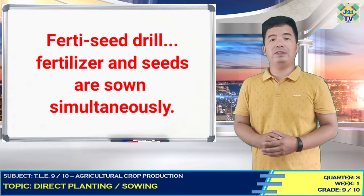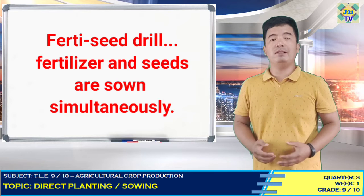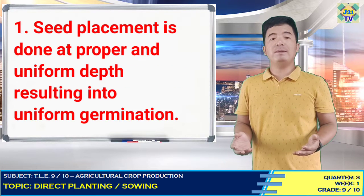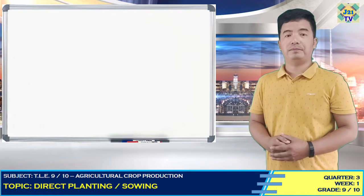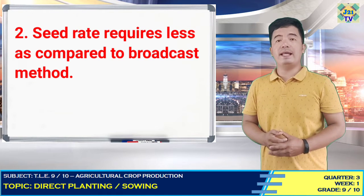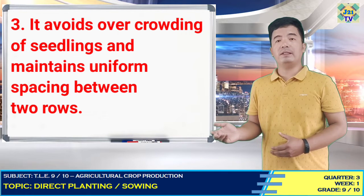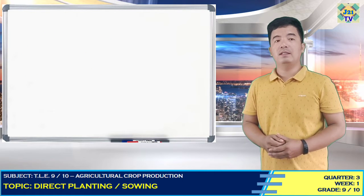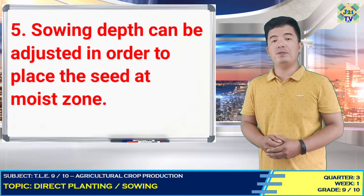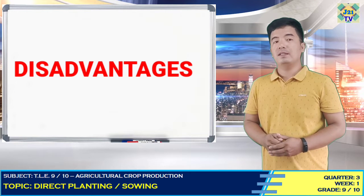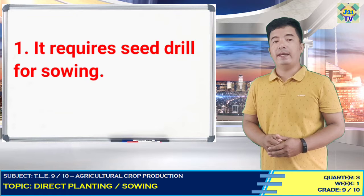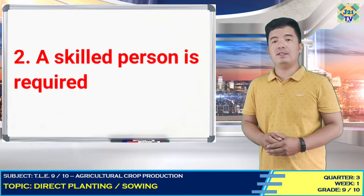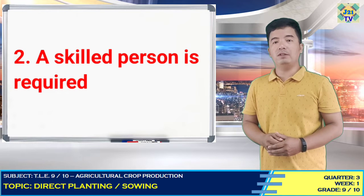A precision seed drill is also used, where fertilizers and seeds are placed simultaneously at the proper depth in the soil. Advantages of drilling: seed placement is done at proper and uniform depth resulting in uniform germination; less seed is required compared to broadcast method; it avoids overcrowding of seedlings and maintains uniform spacing between rows; automation is easily carried out; sowing depth can be adjusted to place seed at the moist zone. Disadvantages: it requires a seed drill for sowing, making it costlier than broadcast; a skilled person is required, otherwise seeds are not sown properly, causing uneven germination and poor crop stand.